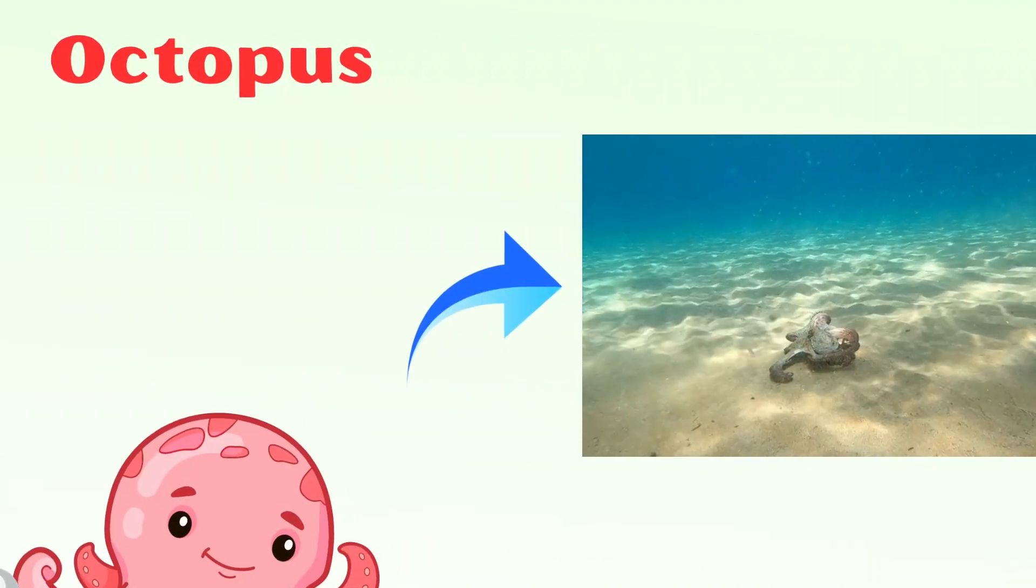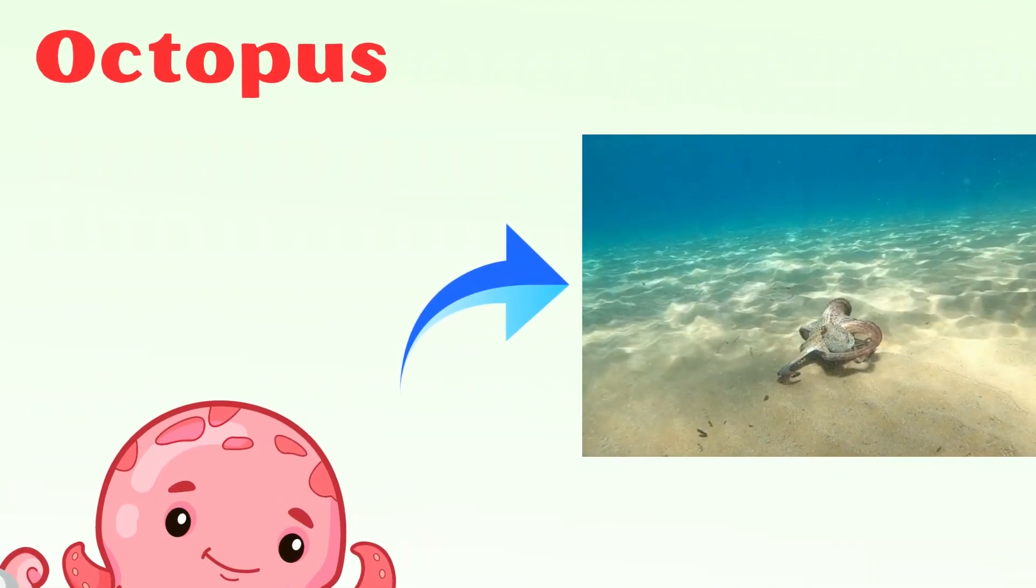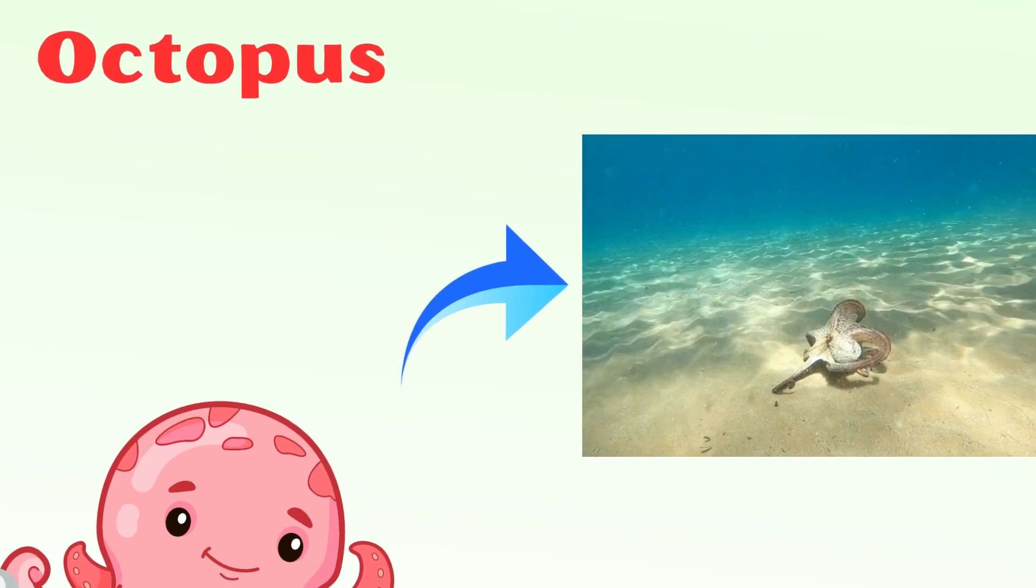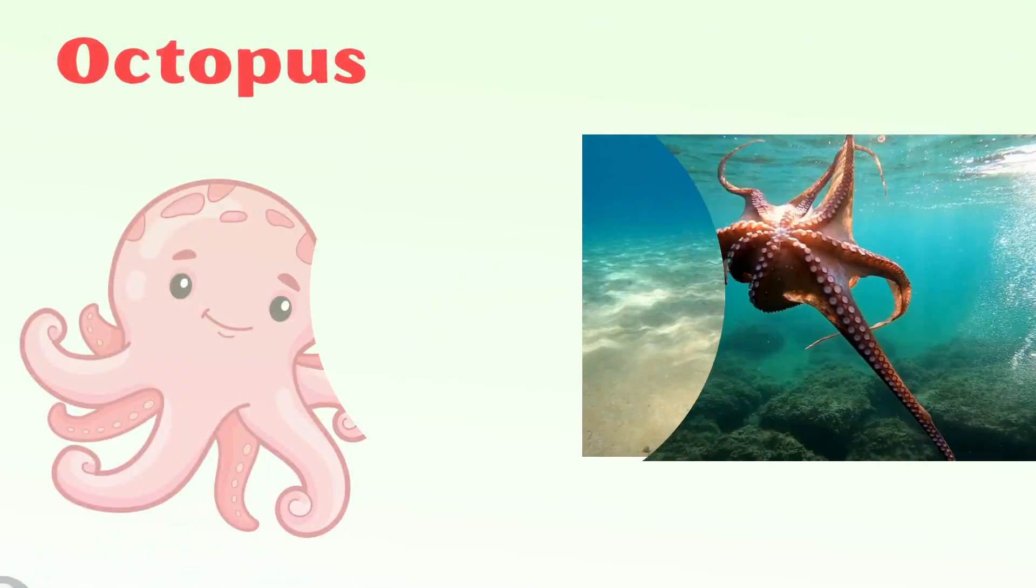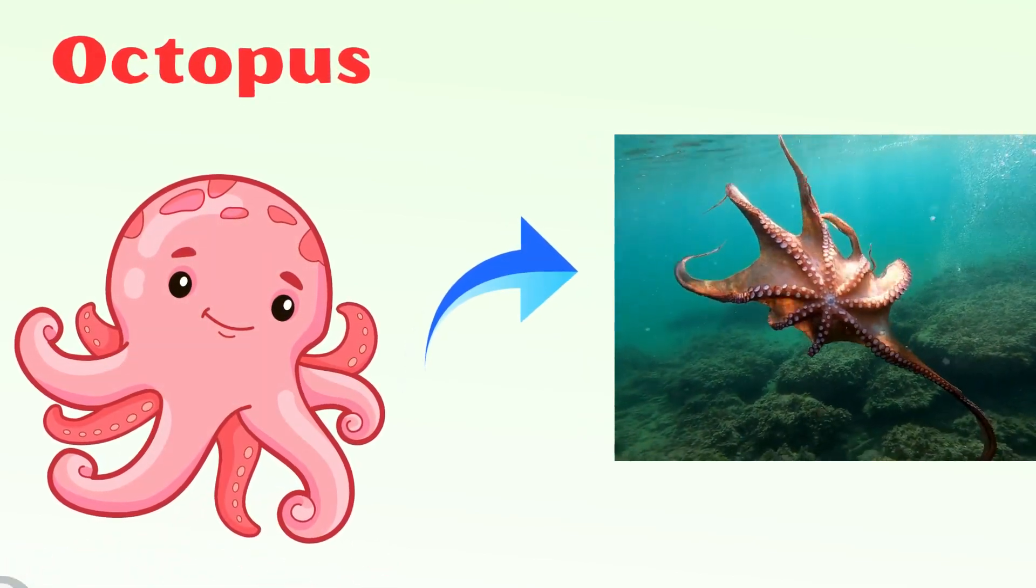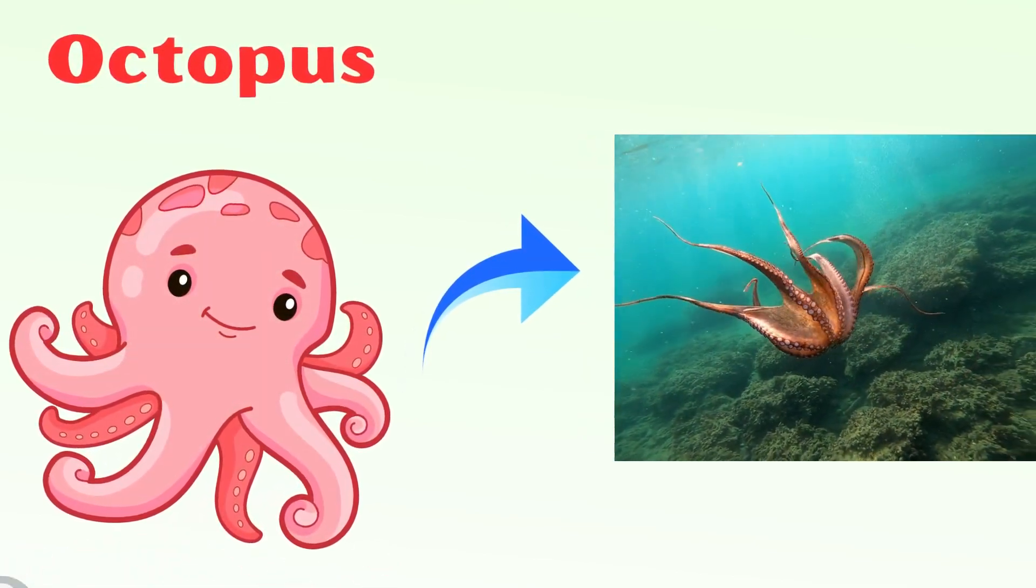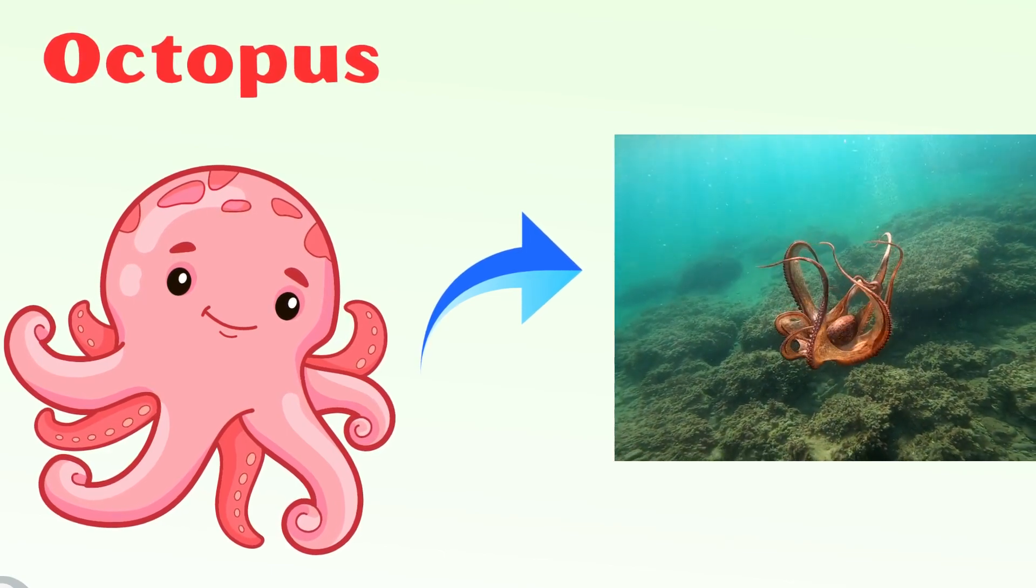A new study has shown that octopus sleep might be more like humans than initially thought and could even include dreaming. Octopus is a fast swimmer, but it prefers to slowly crawl along the sea bottom.